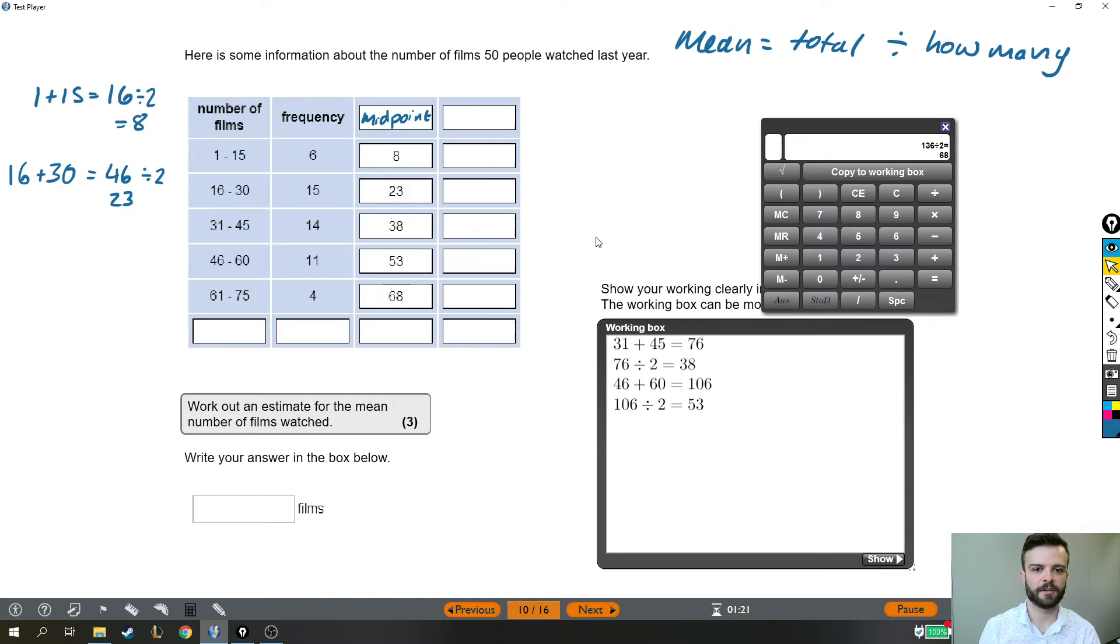Now, again, the reason why I'm doing this is because to find the mean, I'm going to need to know the total number of films that all these people watched, so I can divide by how many people there were. And to get there, I'm going to find some like mini totals. So like I said at the beginning, if we've got 6 people here who watched, we're going to call it 8 films, then altogether those 6 people watched 6 lots of 8 films, so they watched 48 films together. Alright, and this is like a mini total that's going to help us because this is the total number of films that these 6 people watched. If each of them watched between 1 and 15, and we're going to call it 8, that's the point in this column, we're going to say those 6 people watched 8 films, that's 48 films altogether. You then have these 15 people who watched between 16 and 30, we're going to say they watched 23, because that's the midpoint, the halfway point. So we're going to say these 15 people watched 23 films, which means altogether those 15 people watched 345 films.